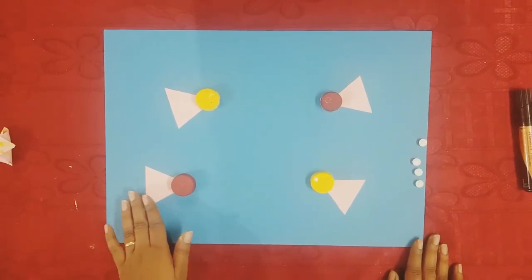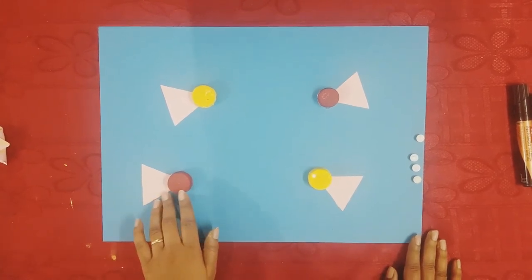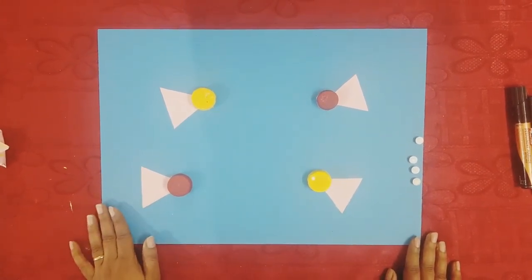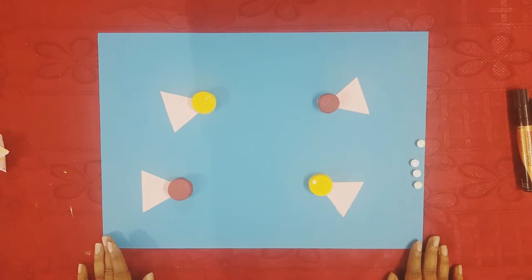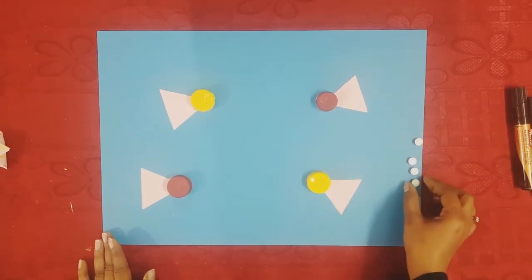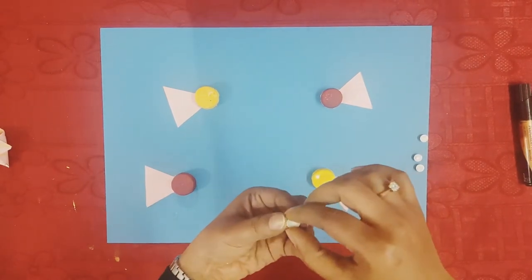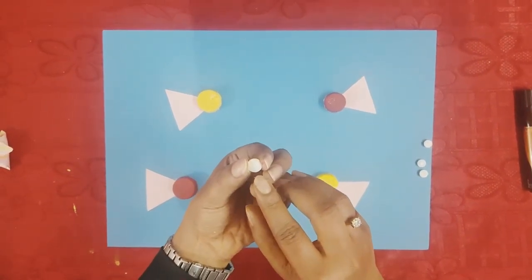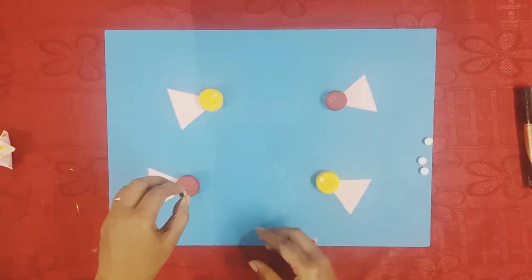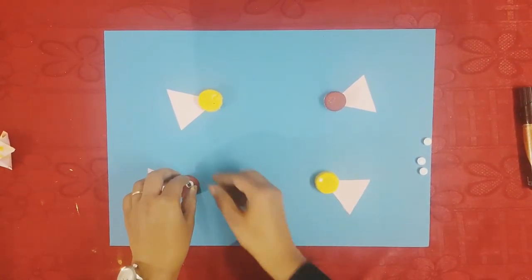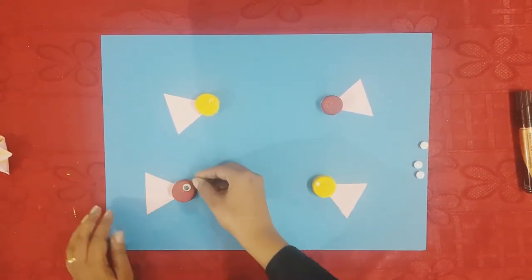Now after sticking the fins and the bottle cap the fish is going to look like this. Next I'm going to stick the eye onto the face of the fish. For this I have already put the fevicol on the eye and now I'm going to place this eye onto the bottle cap.